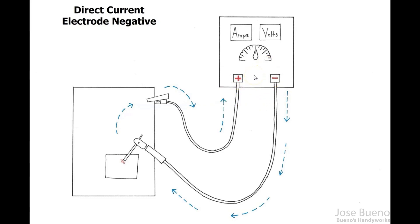With direct current electrode positive, the cable hooked into the negative terminal was the ground clamp, whereas here with DC EN our electrode holder is hooked into the negative terminal. So the only two things that really switch are where our cables are attached to the machine. With direct current, current flows in one direction only - from negative to positive. The current still goes from negative to positive; the only thing that changes is where our cables are attached.